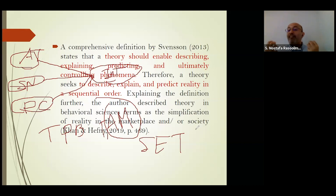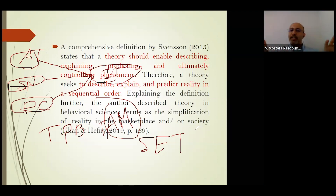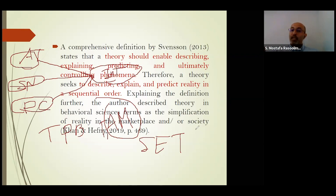Theory explains the rationale behind the relationship between social phenomena. In quantitative research, we have to apply theory to support relationships between variables and between concepts and constructs. Using only literature review and previous studies is not enough. We have two main types of theory: structured theories like TPB or TAM, which have specific variables defined, and unstructured theories like Social Exchange Theory, which have no specific variables.